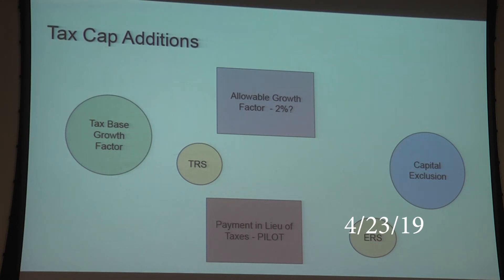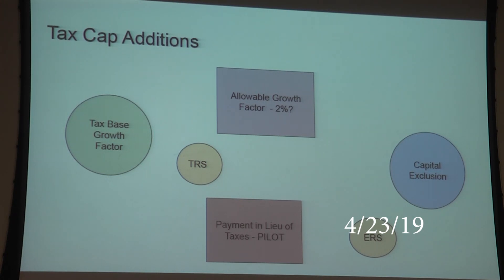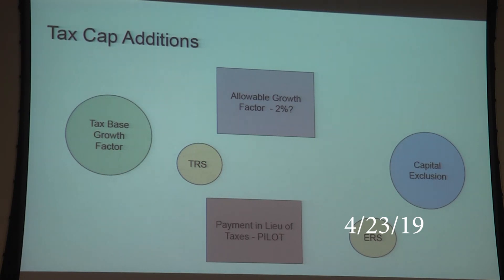The capital exclusion, in the blue circle, allows us to add back any principal and interest related to renovations or additions in the district, minus any building aid received. Importantly, capital for BOCES cannot be included in this calculation — that's still being lobbied at the state level to try to change.